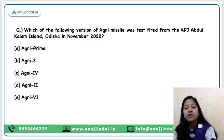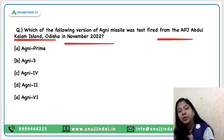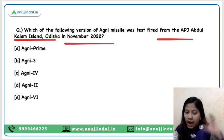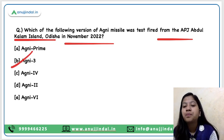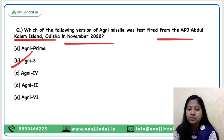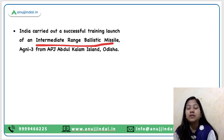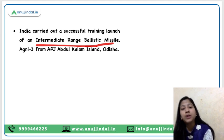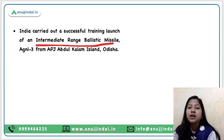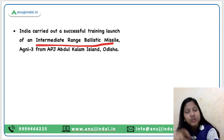The last question of the day: which version of the Agni missile was test-fired from the APJ Abdul Kalam Island, Odisha in November 2022? All the variants listed are part of India's defense profile. Agni 3 was recently test-fired from the APJ Abdul Kalam Island, Odisha. It is an intermediate range ballistic missile. Agni is part of the Integrated Guided Missile Development Programme started by APJ Abdul Kalam himself, which includes Nag, Trishul, Akash, Agni, and Prithvi missiles.